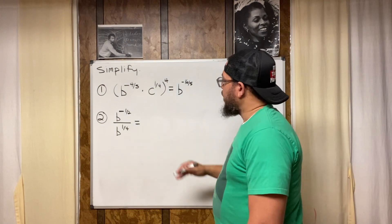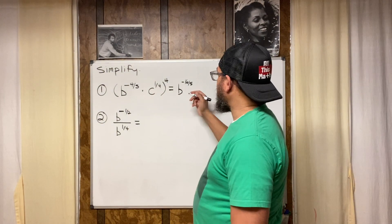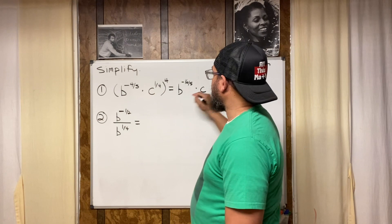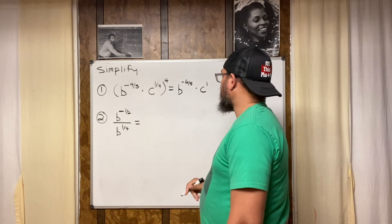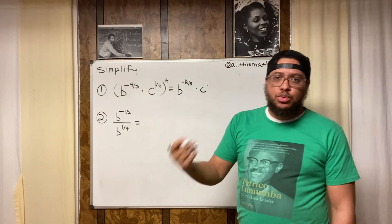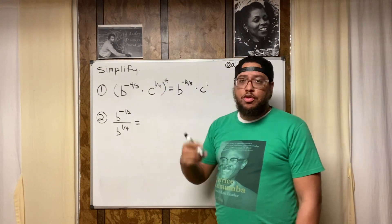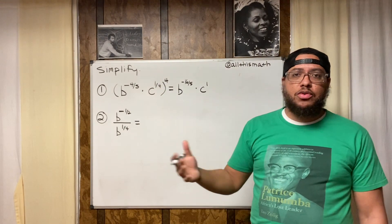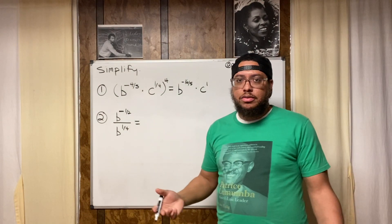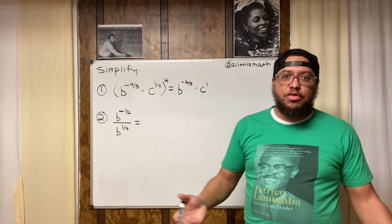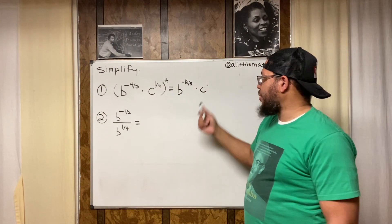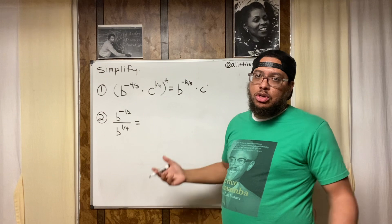Then we do the same thing with c to the one-fourth. Four times one-fourth equals one — like four times four quarters is a whole dollar — so we get c to the first power. When one is your exponent you don't really need to write it.